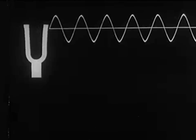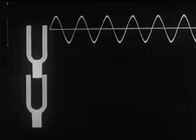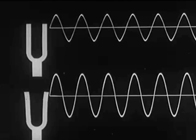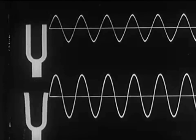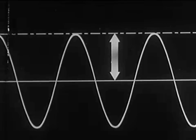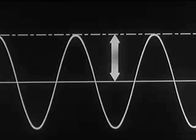Every sound sets up a disturbance in the transmitting medium. The larger the disturbance or displacement of the individual particles, the greater is the height of its graph above the neutral line. This displacement above the neutral line is called amplitude, and it is amplitude that determines loudness. As the amplitude increases, its loudness increases.